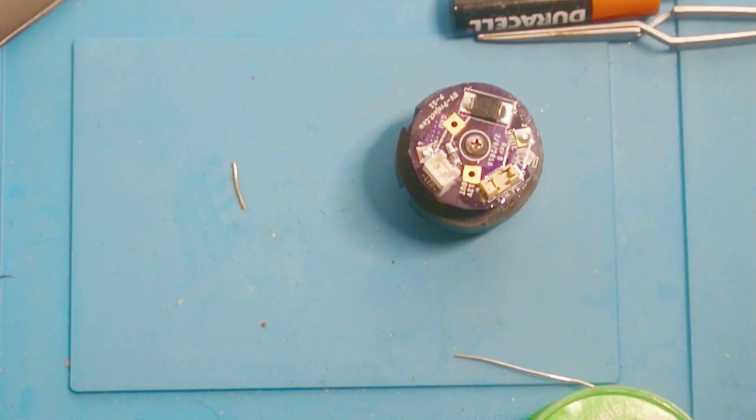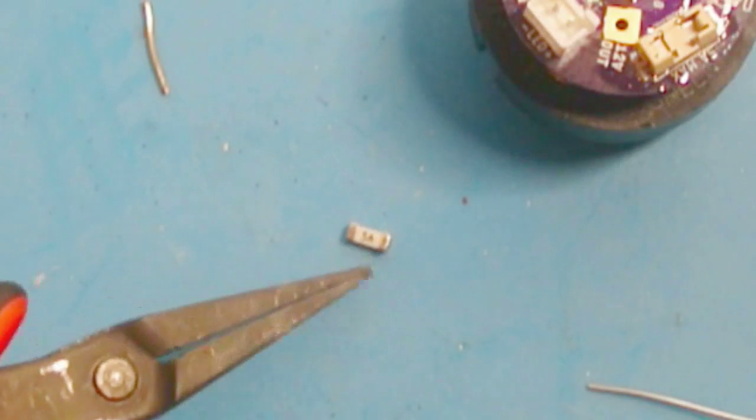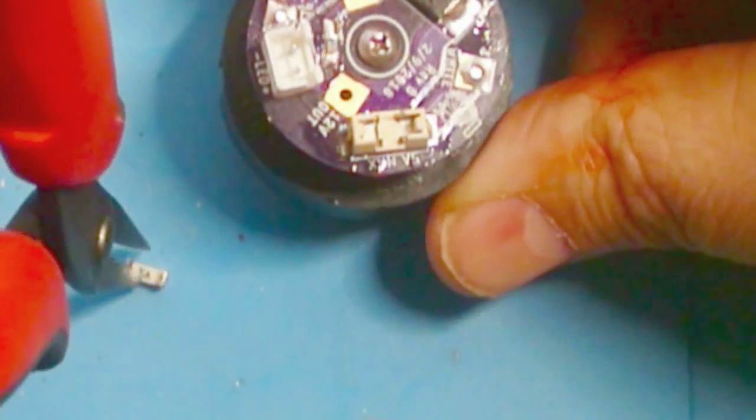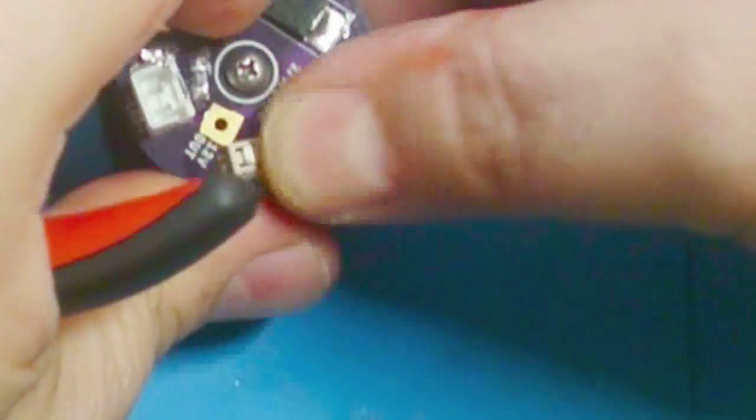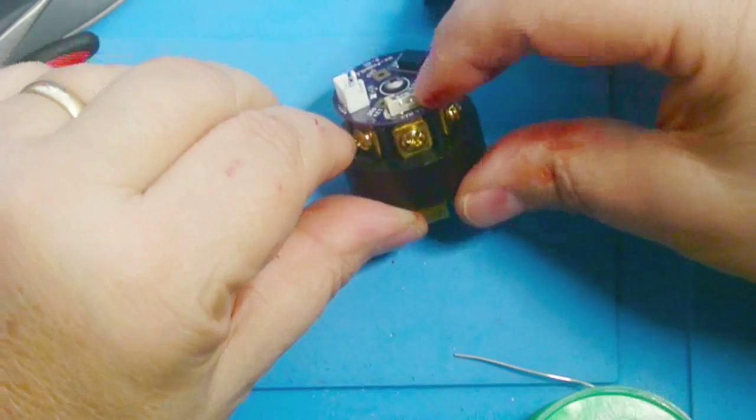This is actually called a nano fuse. It's made by LittleFuse. And here's one of them. Believe it or not, that's a 5 amp fuse. And they're replaceable. So we have the fuse in here.